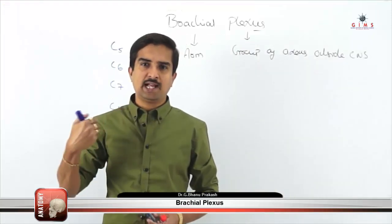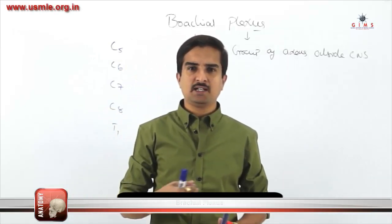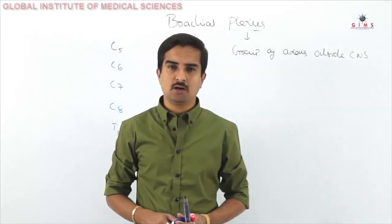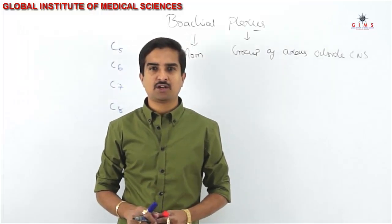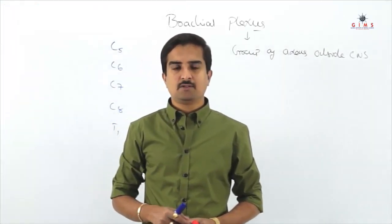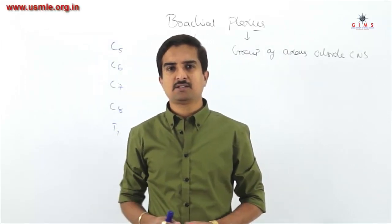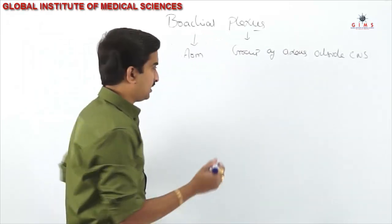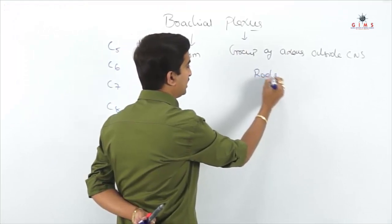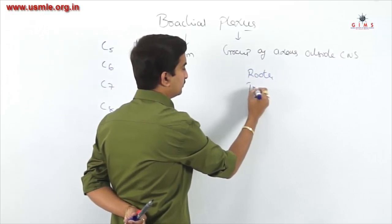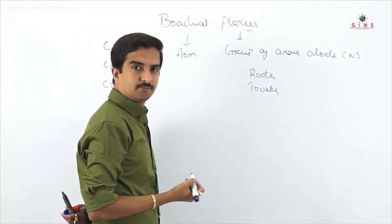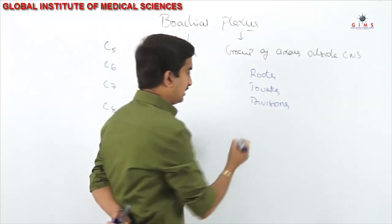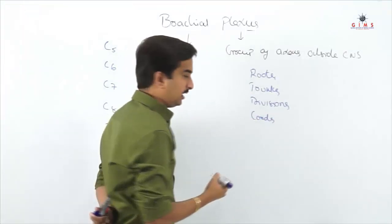From medial to lateral, the parts of the brachial plexus are studied as follows: first the roots — from where they originate; then the trunks, which form divisions; after the divisions, the cords; and finally the branches.